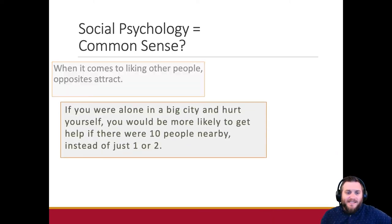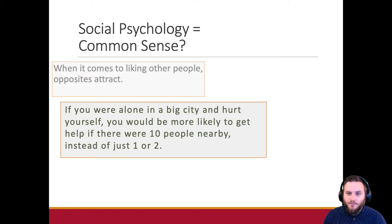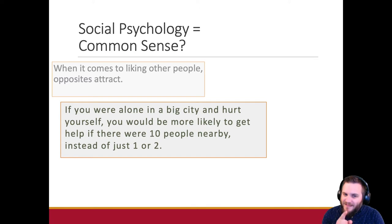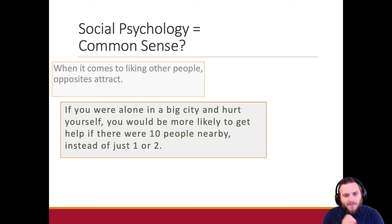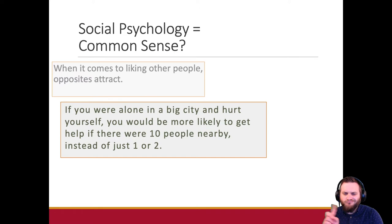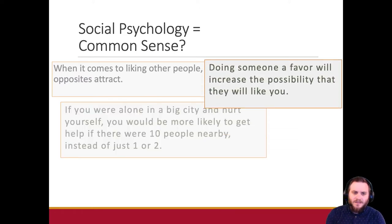If you are alone in a big city and hurt yourself, you would be more likely to get help if there were 10 people nearby instead of just one or two — not quite. Research suggests, and we'll talk about this at the end of the term, more bystanders generally speaking means less help.